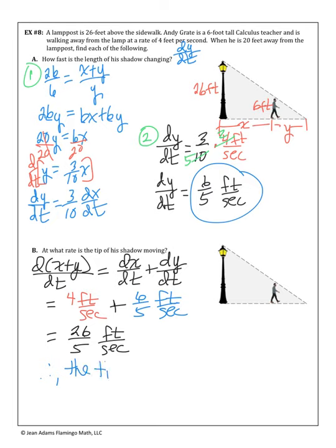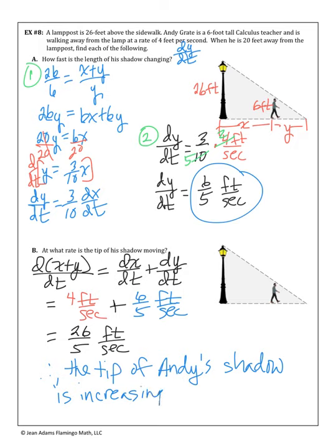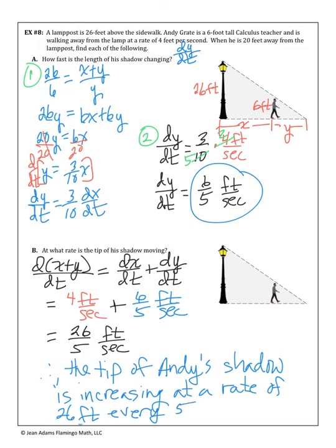The tip of Andy's shadow is increasing at a rate of 26/5 feet per second — meaning 26 feet every five seconds. So that's your rate for the shadow tip. This is a tough section, so persevere — you can do this. Text me your questions.